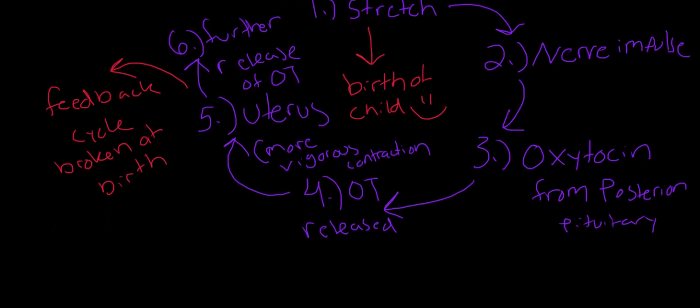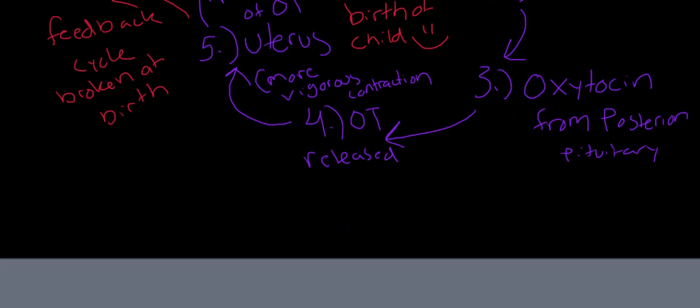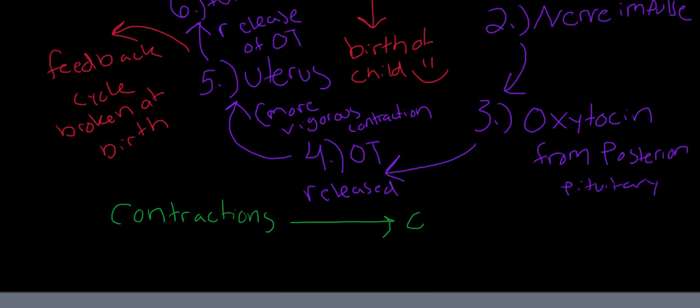Let's summarize this. We have contractions that take place, and these contractions play a positive feedback on the hypothalamus to release oxytocin. In response to the release of oxytocin, it generates more contractions.